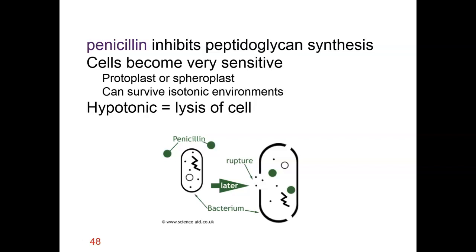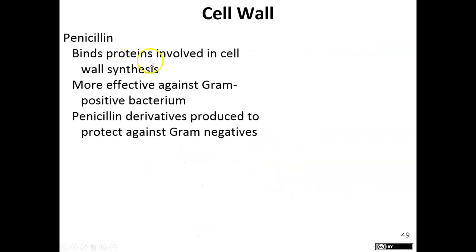Inhibiting peptidoglycan synthesis is much more effective against gram-positive bacteria. Gram-positive bacteria have multiple layers of peptidoglycan that compose their cell wall, whereas gram-negative bacteria only have one or two layers but have that extra outer cell membrane. So if the peptidoglycan is wiped out, gram-negatives still have a protective membrane, meaning this tends to affect gram-positives much more than gram-negatives.